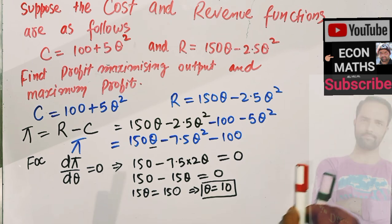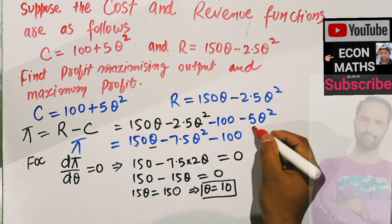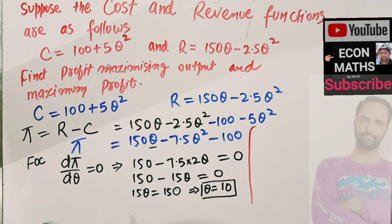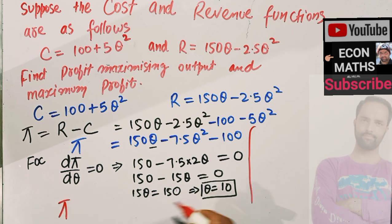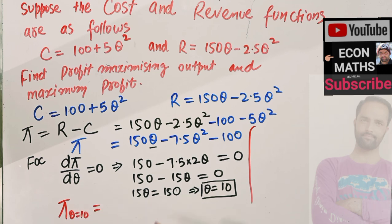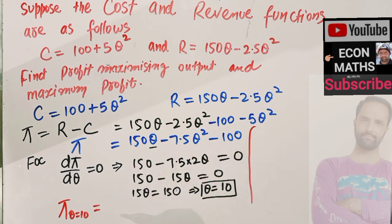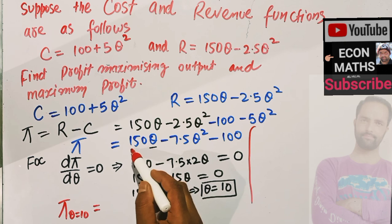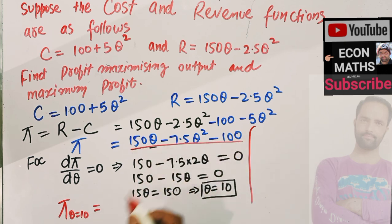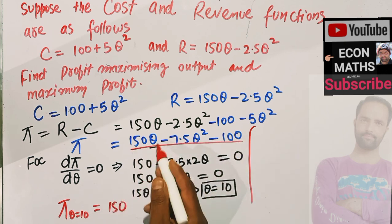To find the maximum profit, what we do is substitute q equal to 10, the profit maximizing output, into the profit function. This is our profit function. Let's plug q equal to 10 here: we have 150, and in place of q we substitute 10.